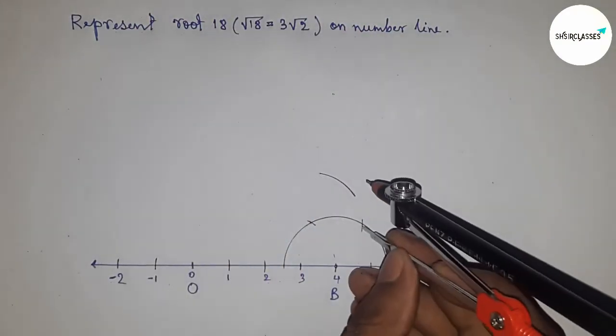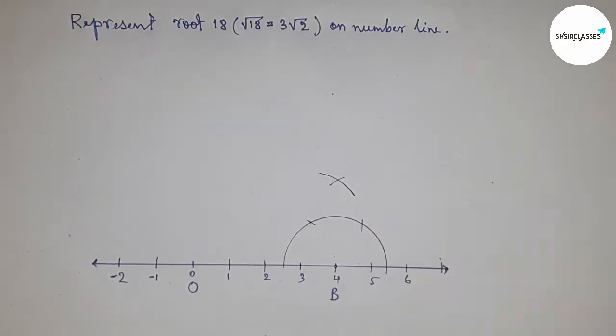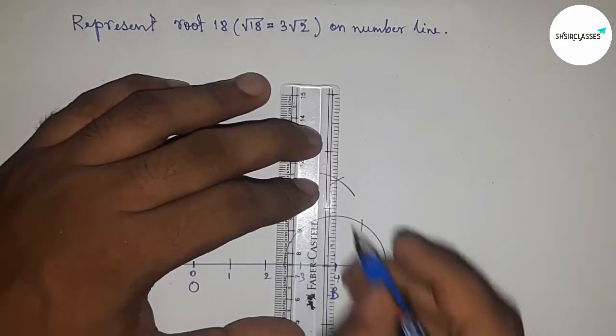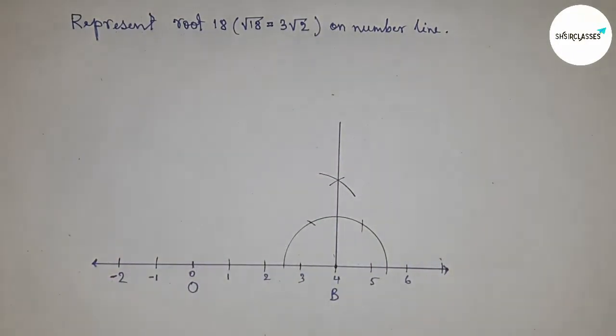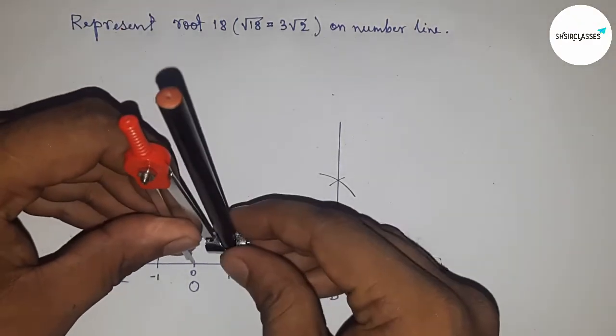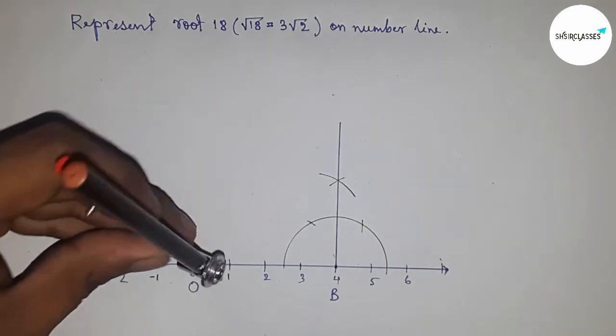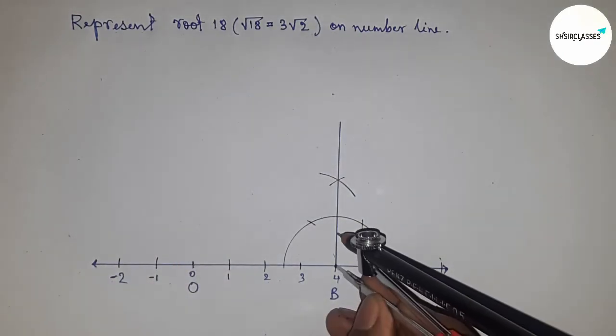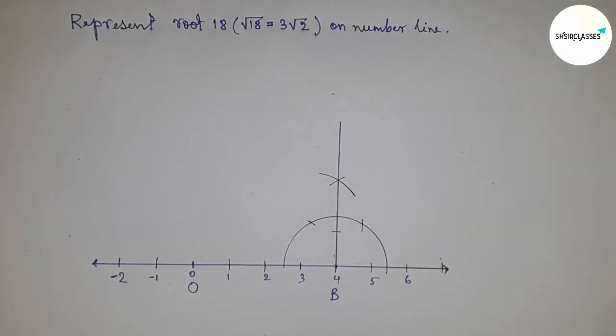On the point 4, or point B. Next, taking the distance of any two line numbers and putting the compass here and cut here. Next...